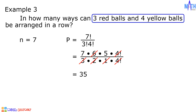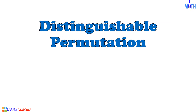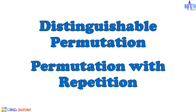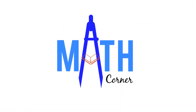There are 35 ways to arrange the balls in a row. We are done discussing distinguishable permutation, also known as permutation with repetition. That's all for this video. Thank you for watching.